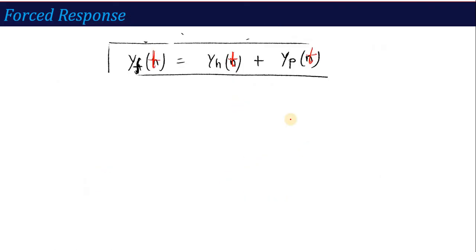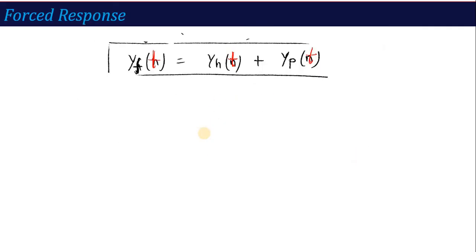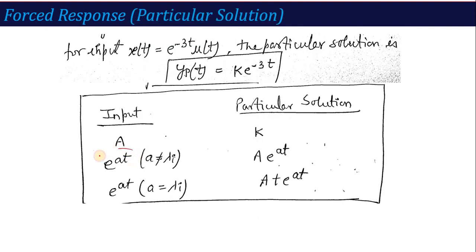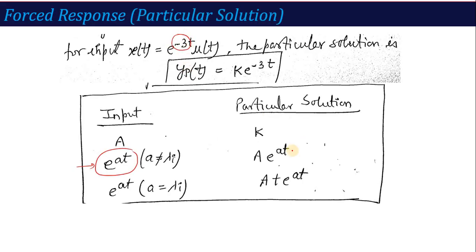For the particular solution, we recall from the last lecture that there is a table where, based on the input type, we choose the particular solution form. Looking at the input, it is e^(−3t)·u(t) — an exponential type. Here the exponent value a = −3 is not equal to λ = −2, so we use the standard exponential form: y_p(t) = K·e^(−3t).